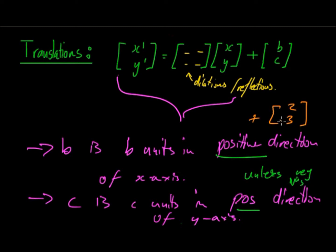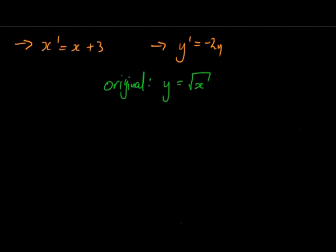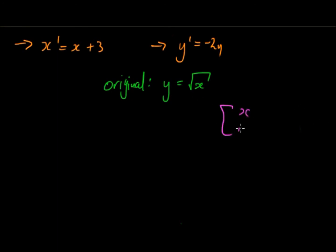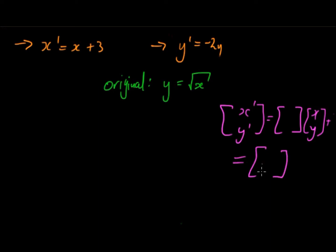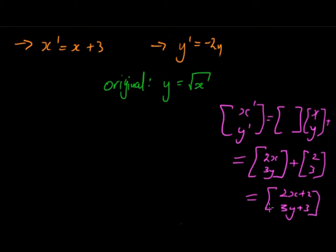Putting this all together: x-dash, y-dash equals the 2-by-2 matrix times [x; y] plus [b; c]. The 2-by-2 times [x; y] gives you some values — say 2x and 3y — then you add 2 and 3 to get [2x+2; 3y+3]. This gives a 2-by-1 result, so we equate: x-dash equals the top value and y-dash equals the bottom value.